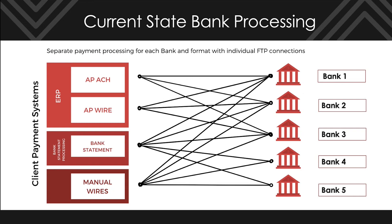Using a graphical presentation, let's examine the issue in more detail. In this example, the client has three separate systems to integrate payment processing: the ERP accounting system for ACH and wire payments, a separate system for bank statement reconciliation processing, and the use of bank portals for treasury one-off wire payments. Each of these are connecting to multiple banks.